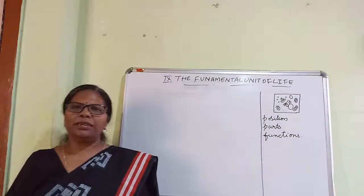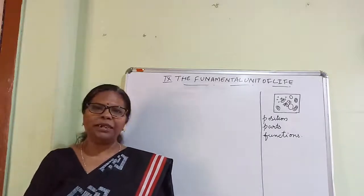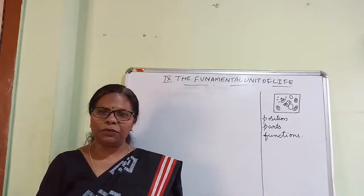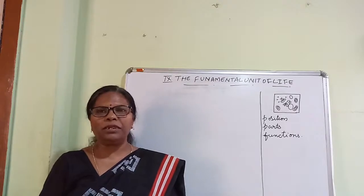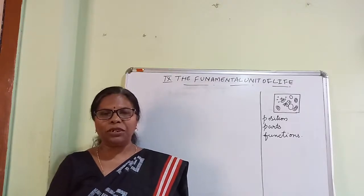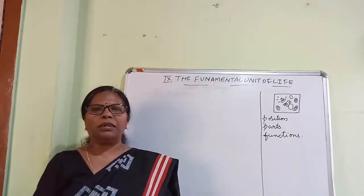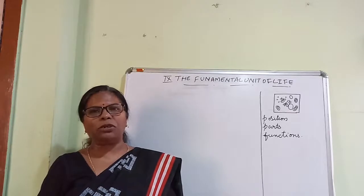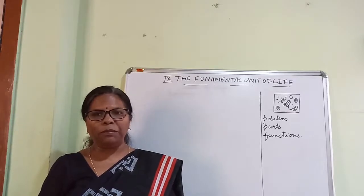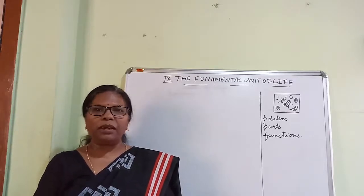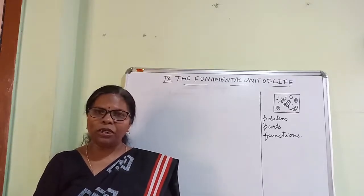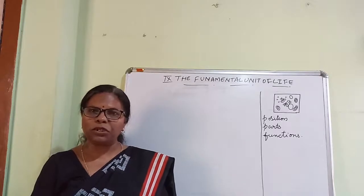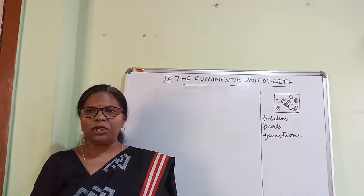Hello students, this is 9th standard, the fundamental unit of life chapter. Children, this is actually a continuation class. We have completed plasma membrane, which is also called as cell membrane, lysosome, Golgi complex, endoplasmic reticulum, and cytoplasm.